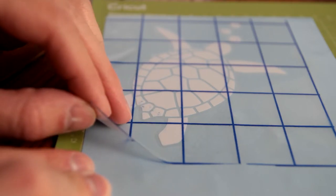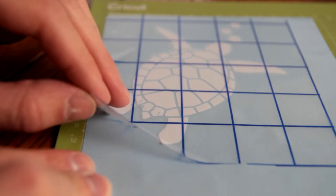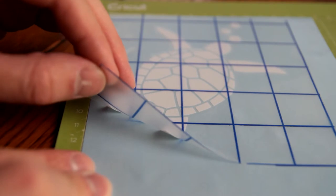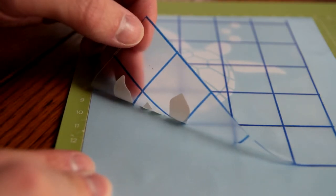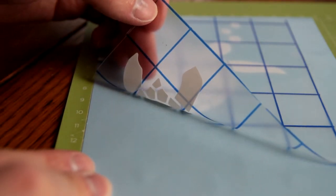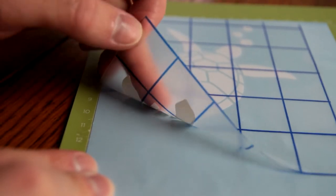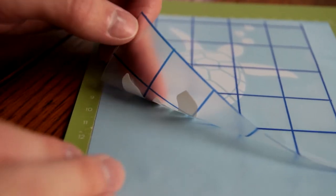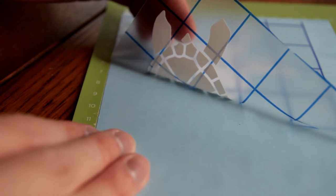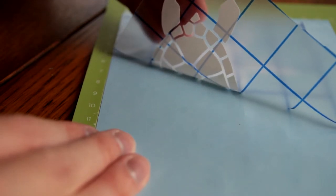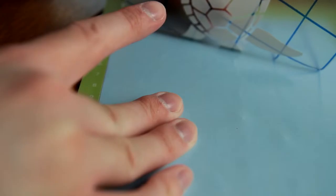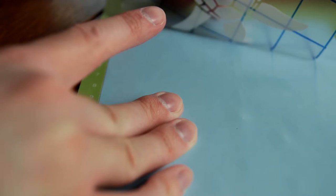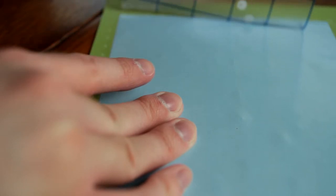Okay, so now we're going to pull up on the transfer paper with the attached vinyl. Just go really slow. If you notice that a piece is being stubborn, you can just push it back down and then apply some pressure to whatever part isn't sticking to the transfer paper. Usually this is pretty straightforward and you don't have too many issues. It usually works pretty well even on the first try.